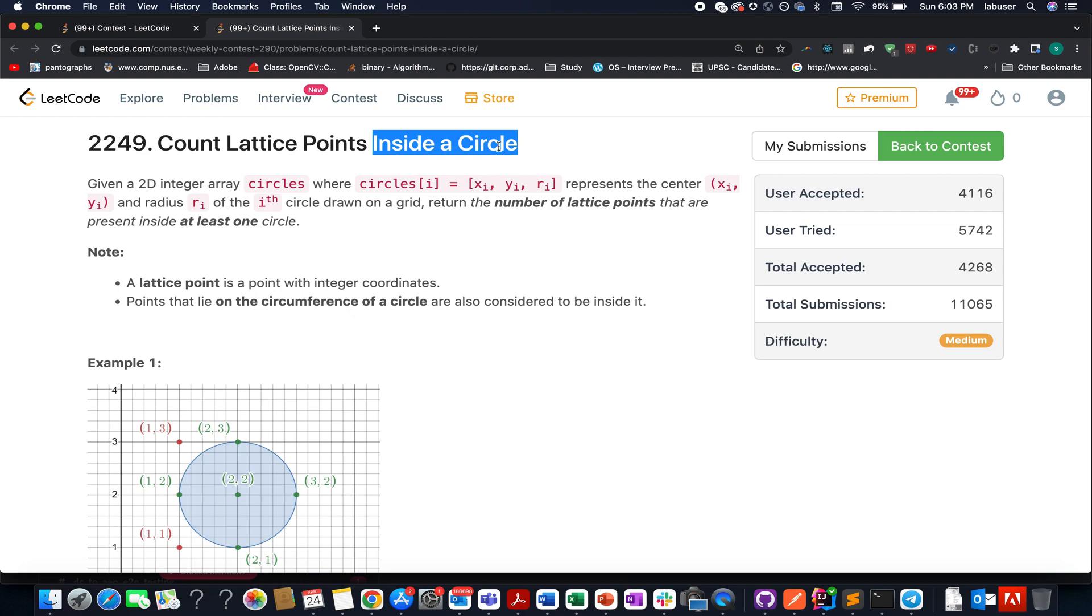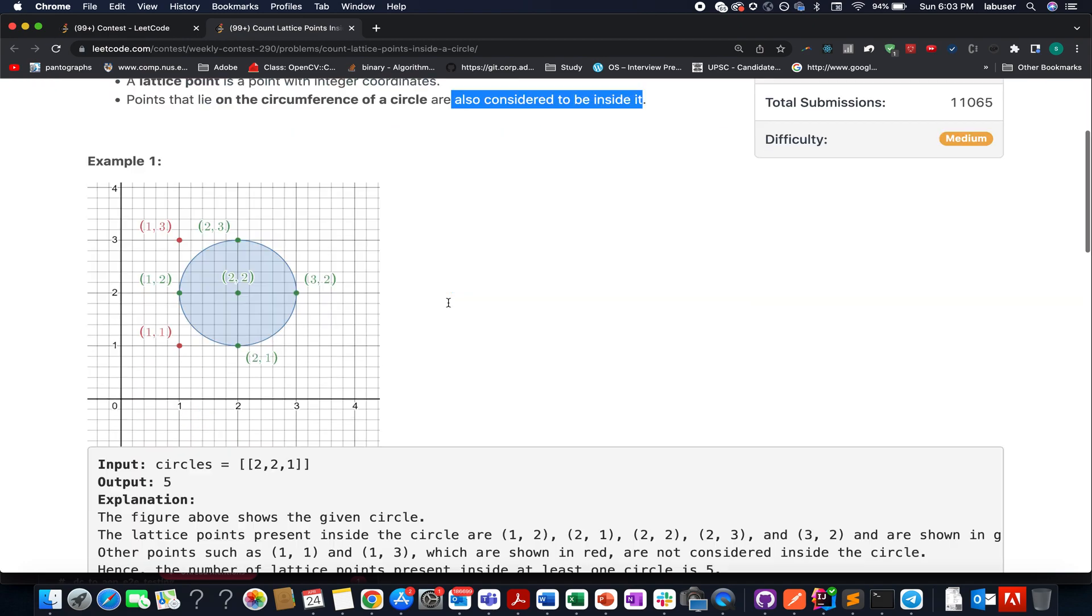In this question we are given a 2D matrix where each row represents a circle with three parameters: the x center coordinate, the y center coordinate, and the radius. We need to count the number of lattice points that are present inside at least one circle. A lattice point is simply a point that has integer coordinates. Also, a point that lies on the circumference of the circle is also considered to be inside it.